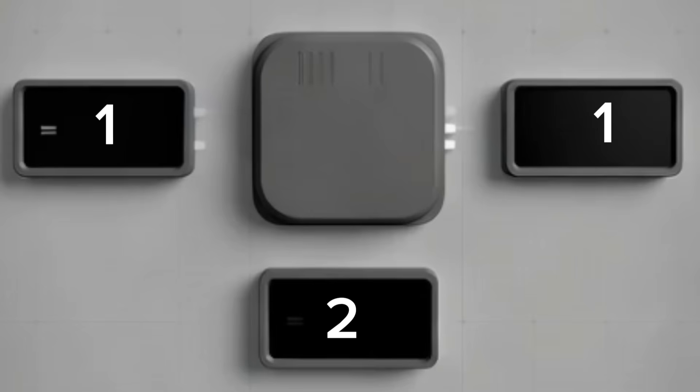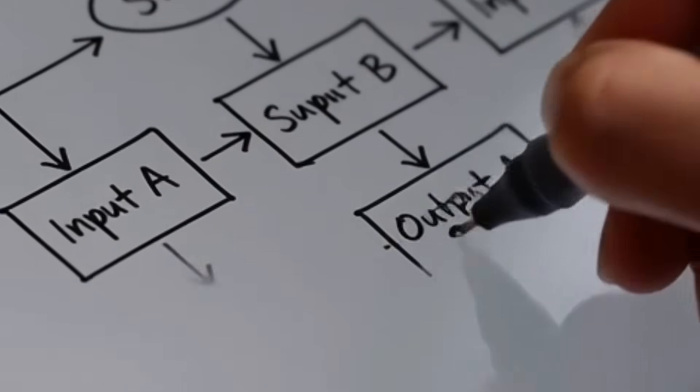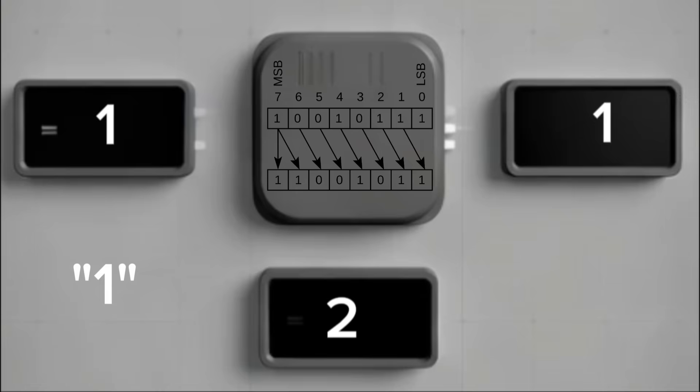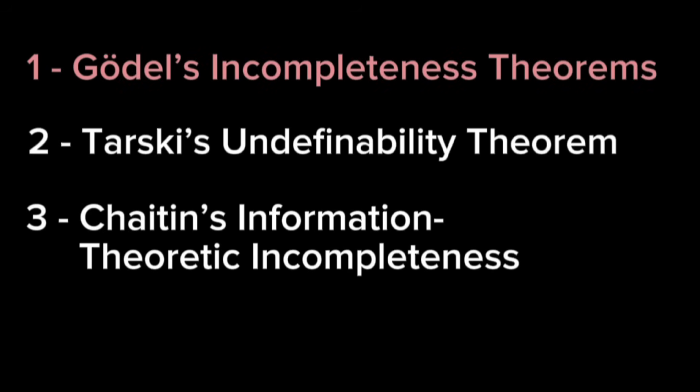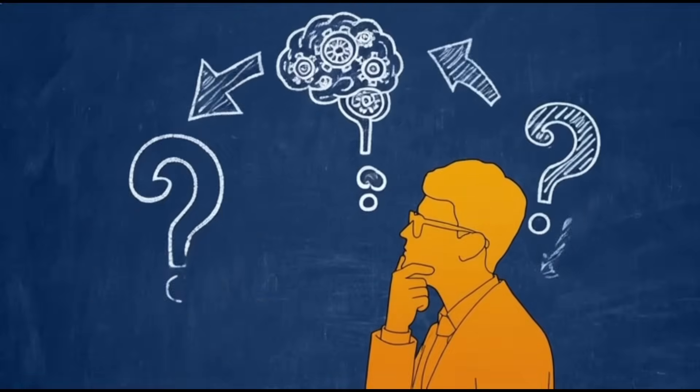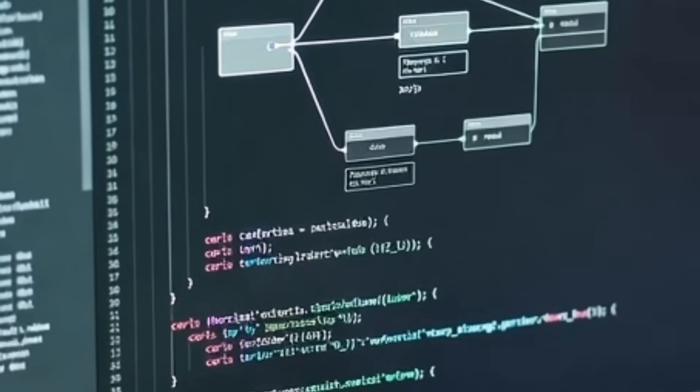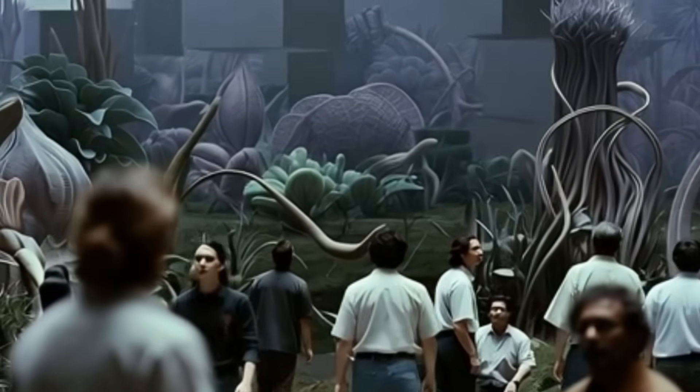Think about a simple calculator. It gives you the answer to one plus one is equal to two, but it can only do that because someone programmed the rules, someone defined what one means, someone gave it the laws of arithmetic, and someone set the logic beforehand. The calculator does not discover truth. It only follows instructions. This is exactly what Gödel proved. Every logical system must accept some truths without proof, and some truths can never be proven from within that system.